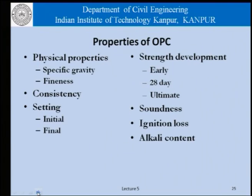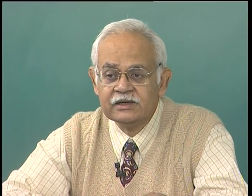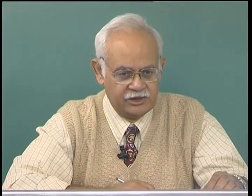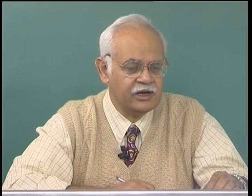Continuing our discussion on properties: we need to study the physical properties of cement, which include specific gravity and fineness, consistency, setting time — initial and final — strength development at early age, 28 days and ultimate, soundness, ignition loss, and alkali content. What we must remember is that these properties are often interrelated. The fineness of cement is related to the consistency; the fineness of cement is also related to strength development and so on. When looking at the properties of cement, we should look at a comprehensive picture and relate one property versus the other.